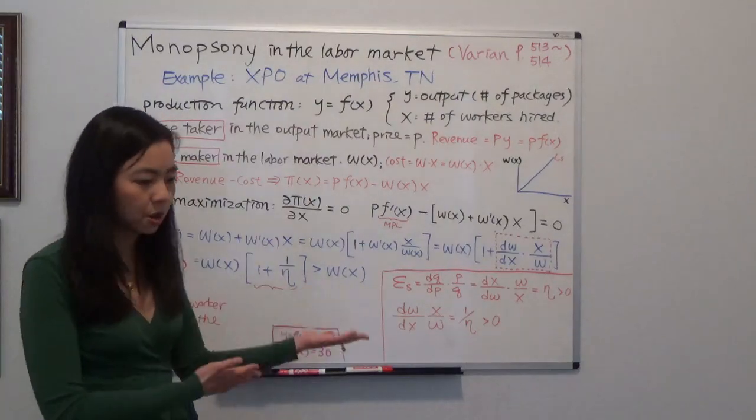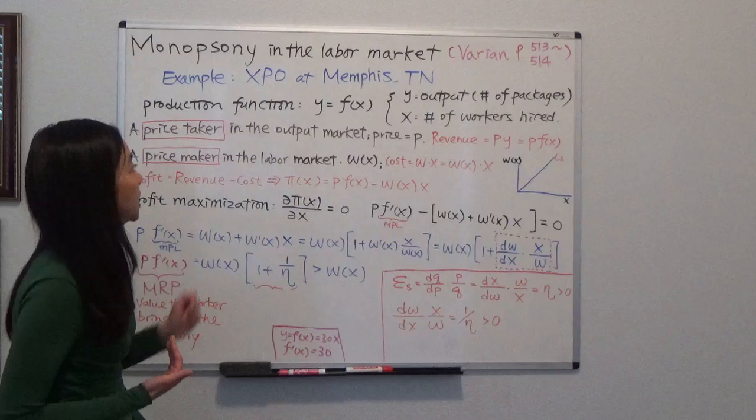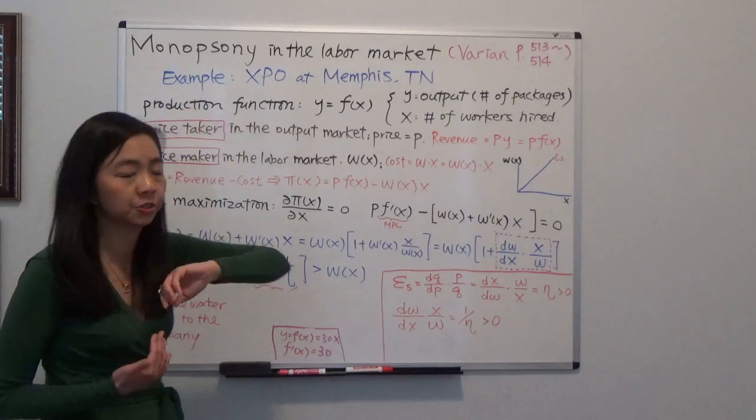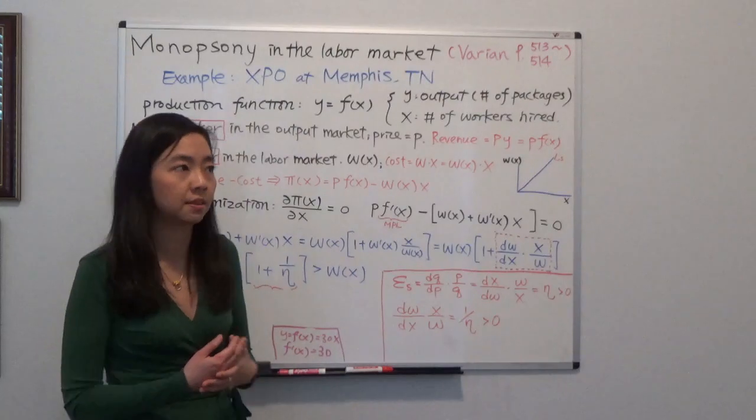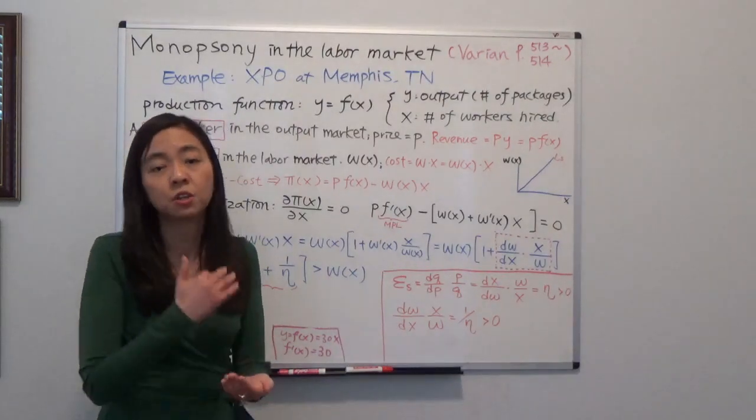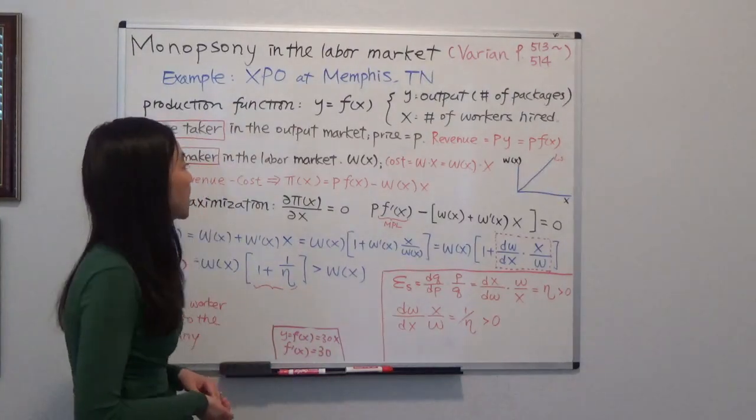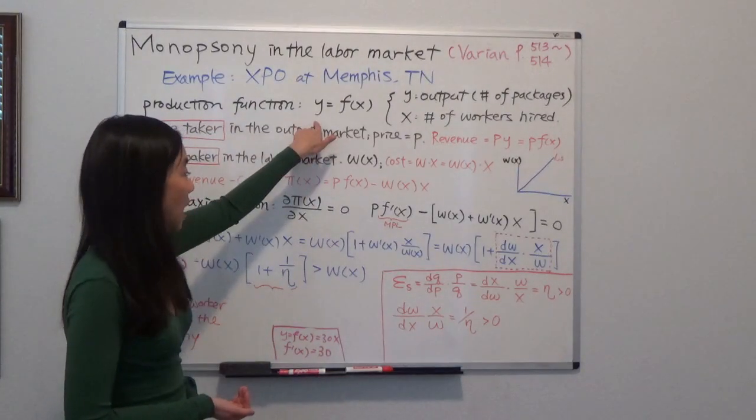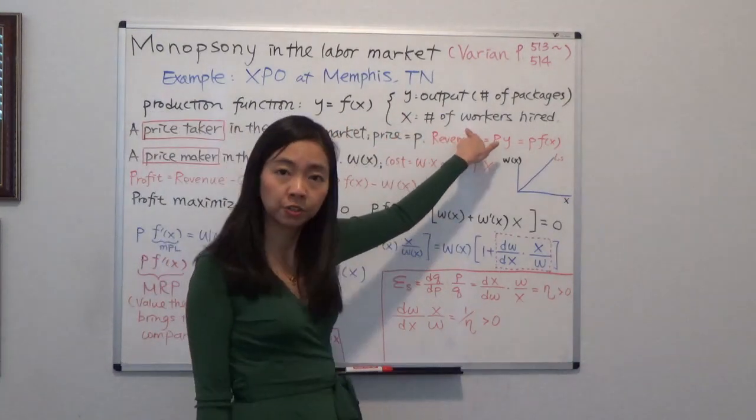So going back to our mathematics, suppose you are this monopsony, and you have a production function. Y is your output. So for example, that would be the number of packaged service you provide for, say, Verizon, or you provide for Disney, something like that. And Y, that's the output, is a function of X. So X is the number of workers you hire.